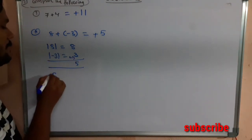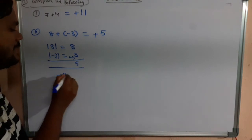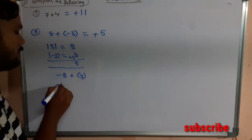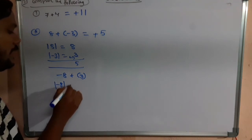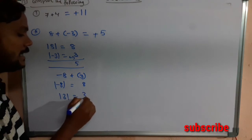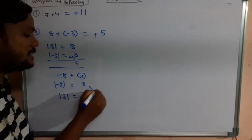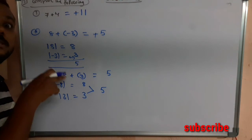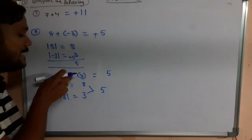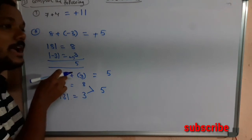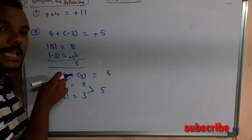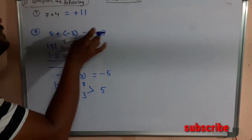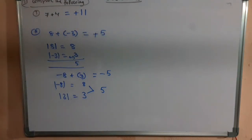For example, if instead we had (-8) + 3, we would still take the absolute values: absolute value of -8 is 8, absolute value of 3 is 3. The difference is 5. But here, -8 has the greater absolute value and its sign is negative, so the answer would be -5. For the given question 8 + (-3), the answer is +5.